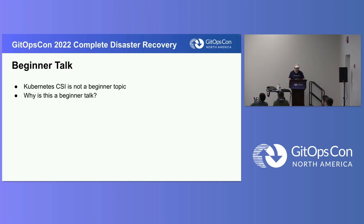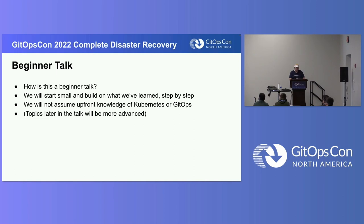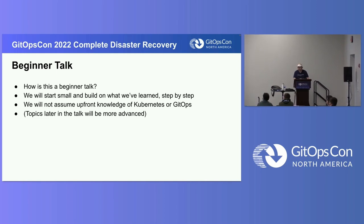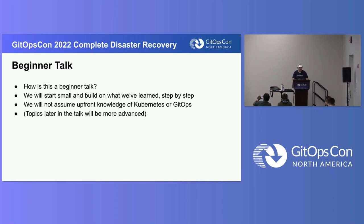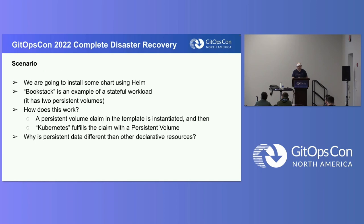We're going to start small and we're going to build upon what we know or what we've learned. Here's our scenario for today. We are going to install some chart using Helm. I have picked Bookstack — completely random. It has enough persistent volumes to be a useful example for this demo.